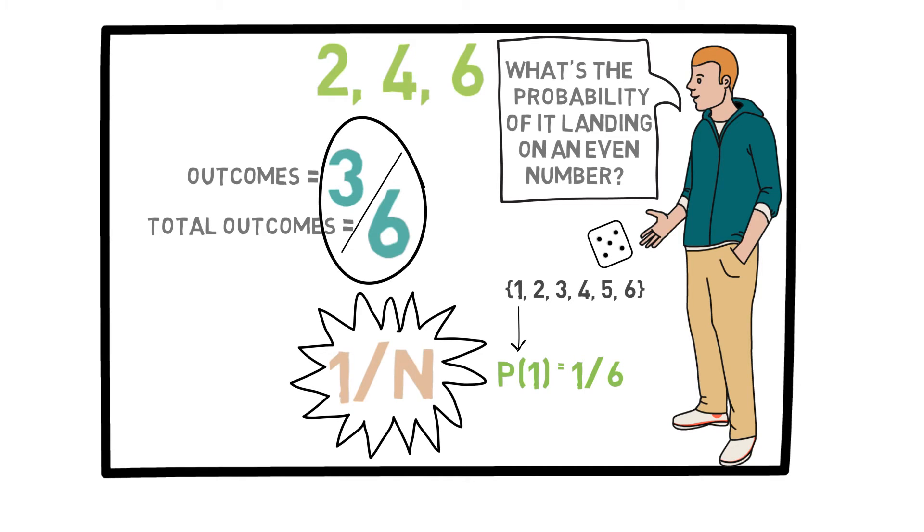We can also generalize this and say that whenever I have equally likely outcomes, the probability of event A is the total number of outcomes in event A divided by the total number of possible outcomes. So we can solve these kinds of problems by using this formula.